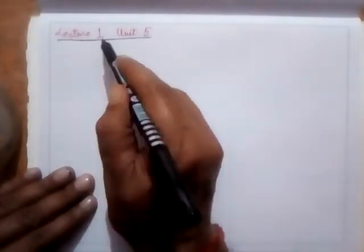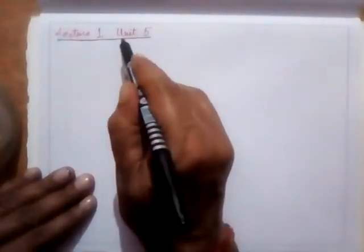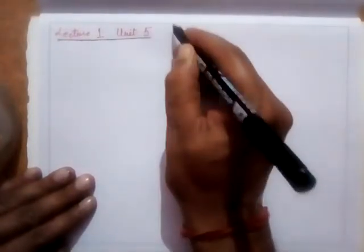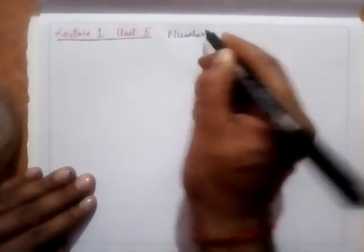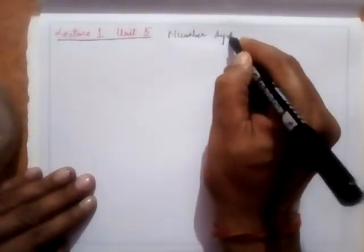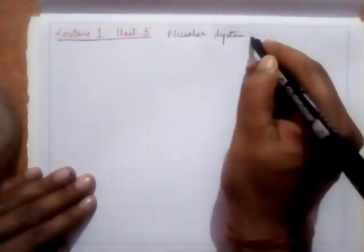Good morning all. Let's start with the course. It's the first lecture and as I told you in my previous introductory lecture, I'll start with unit 5. This unit 5 is about the number system, logic gates, and Boolean algebra. I'll discuss logic gates and Boolean algebra later on. I'll start with the number system first.